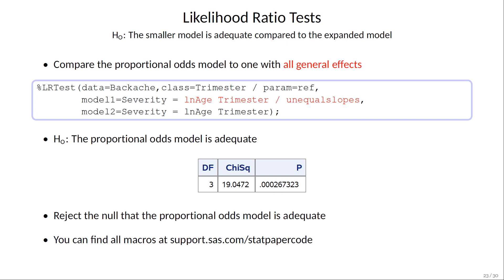This first test corresponds to the score test of the proportional odds assumption we showed earlier. It compares a model with two complete sets of parameters, so that's 8 parameters, by using the unequal slopes option to the original proportional odds model that has 5 parameters. The p-value says we reject the null that the smaller proportional odds model is adequate.